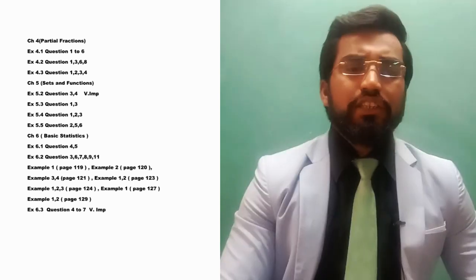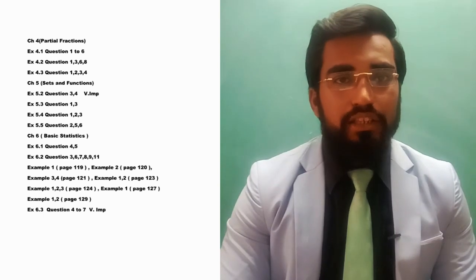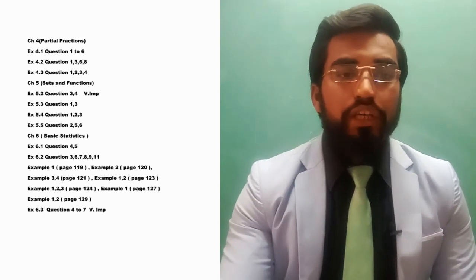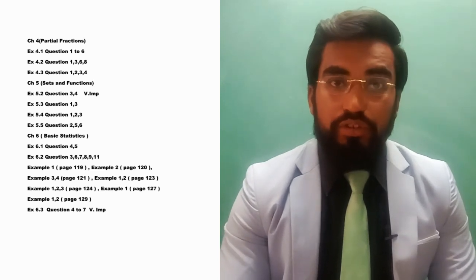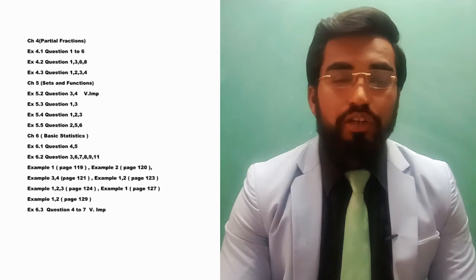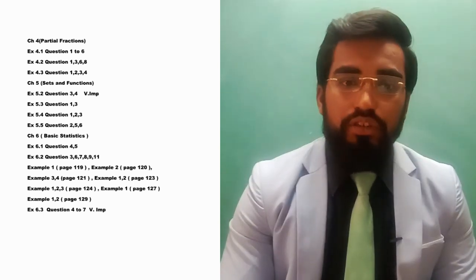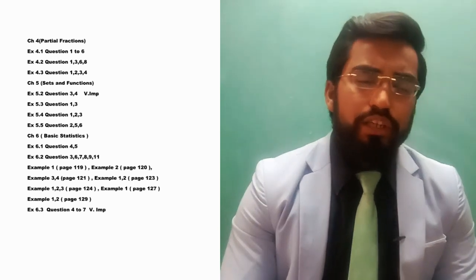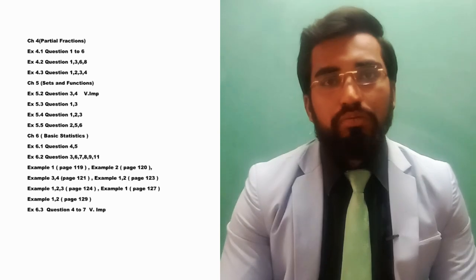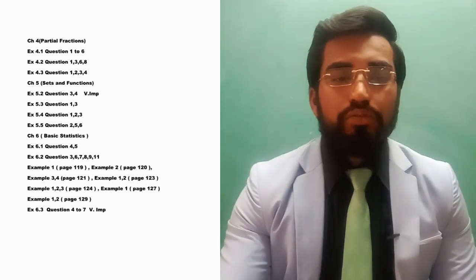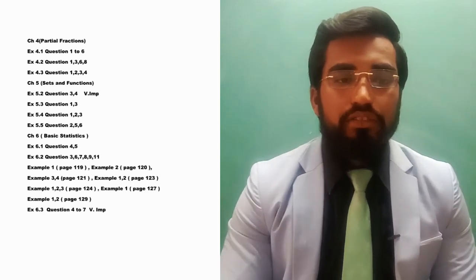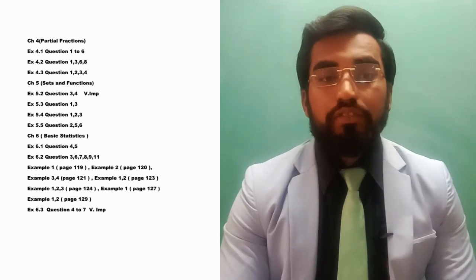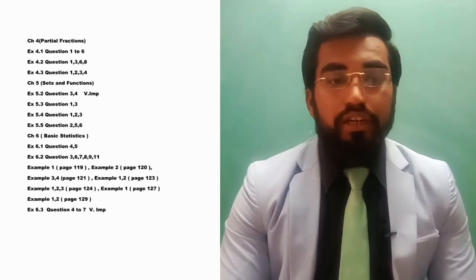Next, chapter number six, whose name is Basic Statistics. Exercise 6.1: question number four and five. Exercise 6.2: question number three, six, seven, eight, nine, and eleven. These are very very important examples: example number one on page 119, example two on page 120, examples three and four on page 121, examples one and two on page 123, and example on page 129. Exercise 6.3: question number four to seven.